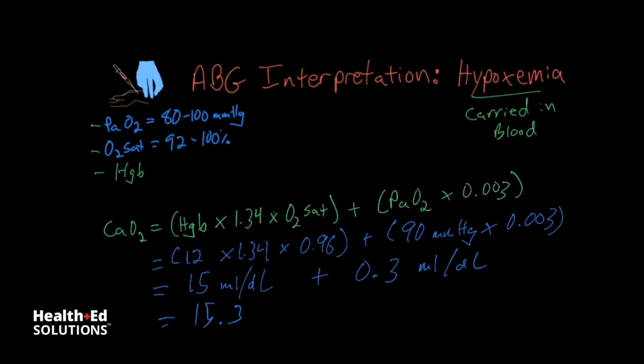So this is the amount of oxygen that is carried in blood. And you can see, of this 15.3, only 0.3 is coming from the amount of oxygen dissolved in the blood, and about 50 times that is being carried, saturated, or bound with hemoglobin.